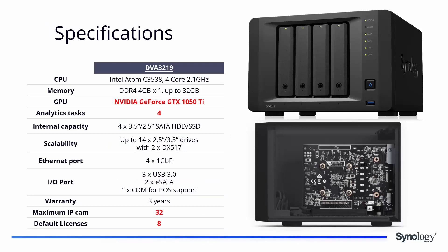The DVA3219 features an Intel Atom C3538 quad-core 2.1 GHz processor and 4 GB of DDR4 RAM, upgradable up to 32 GB. It includes an NVIDIA GeForce GTX 1050 Ti GPU and can handle four simultaneous analytics tasks. It has a four-bay capacity, scalable up to 14 drives with the DX517 expansion unit, four 1 GbE Ethernet ports with link aggregation, a three-year standard warranty, and supports up to 32 IP cameras with eight default licenses.